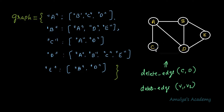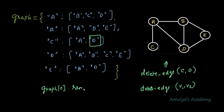We deleted an edge between C and D, so first we need to do changes in the value of key C. We need to get the value of C and delete D from it, because now C is not adjacent to D — that's why we need to delete D from this list. We perform graph[C].remove(D). Here graph[C] accesses this list and we remove D. So C is V1 and D is V2.